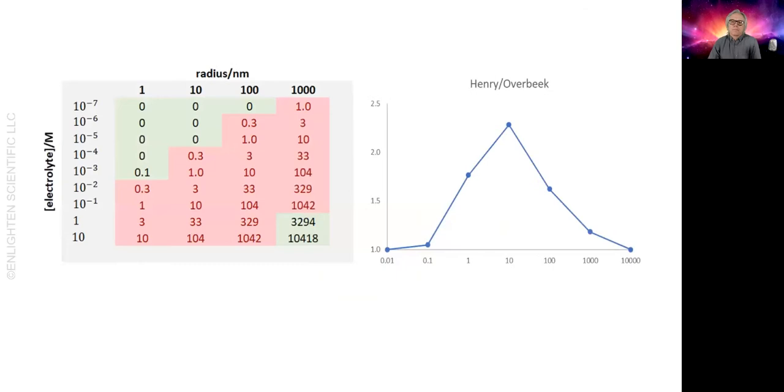Here we see the electrolyte concentration tabulated against the particle radius. The pink color shows where we'd expect significant deviation from the models that commercial instruments provide. And it's pretty much most of the real world. And I haven't even touched on measuring the mobility and the assumptions that go along with that.